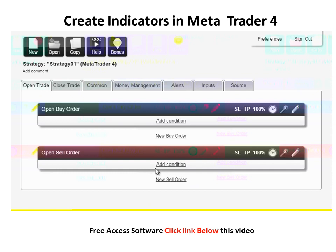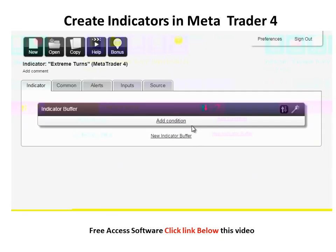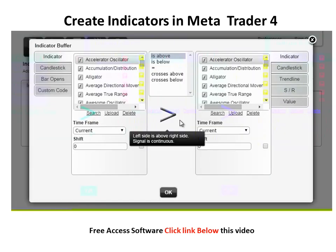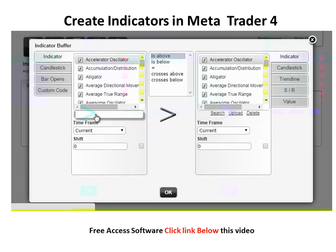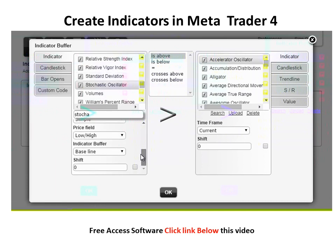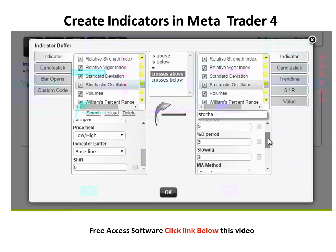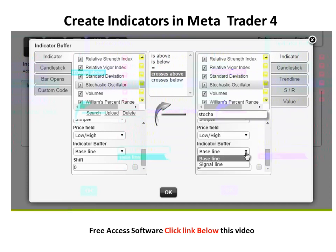Let's do it. Create a new MetaTrader 4 indicator and call it Extreme Turns. Add condition, Stochastic Oscillator — the indicator buffer is baseline — crosses above, and again Stochastic Oscillator. But here we choose the signal line.